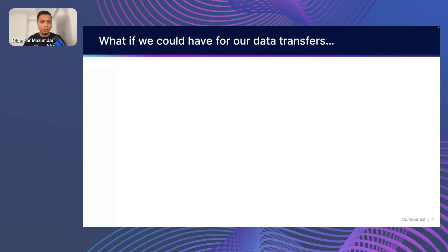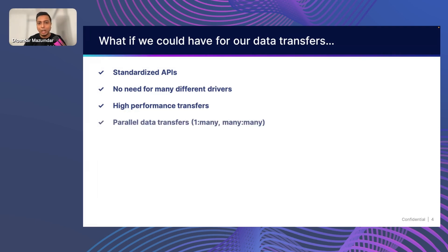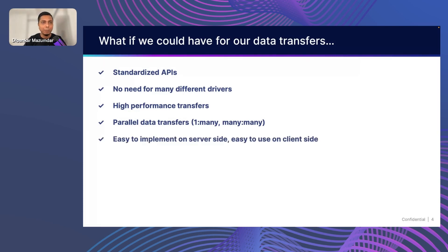Let's talk about an ideal best-case world where we have the following things for our data transfer. First, a standardized API — it doesn't matter what system or language you're using, you have a standardized set of APIs which makes it easier to develop. There is no need for different drivers. Right now, if you connect to any data store, you need the system driver, which means you also need to manage them. What if we could use a standardized API with just one single driver? Performance is a huge aspect when dealing with a lot of data. We also want parallel data transfer — both one-to-many and many-to-many — and we want this to be easy to implement on both the server and client side, which helps in adoption and ultimately makes it the standard.